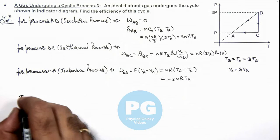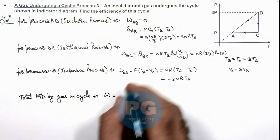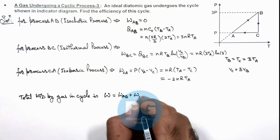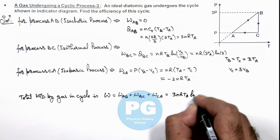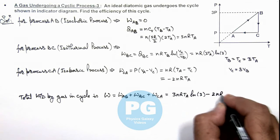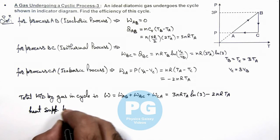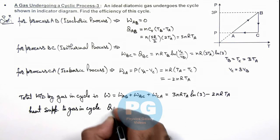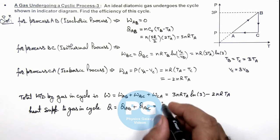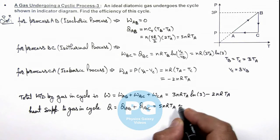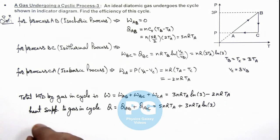Here we can simply write total work done by gas in cycle is, so total work done is sum of the three works: WAB plus WBC plus WCA. So we sum it up, this gives us 3nRTA ln 3 minus 2nRTA. Similarly, here we can calculate the heat supplied to gas in cycle. This Q we can write as sum of these two heats which are QAB plus QBC. So the numerical values we are having is 5nRTA plus the same value of work done in isothermal process, 3nRTA ln 3.